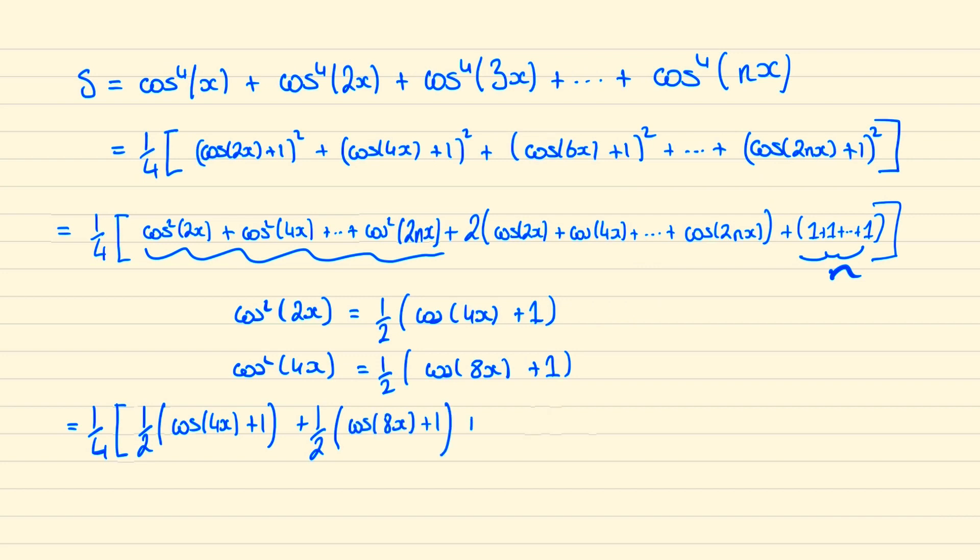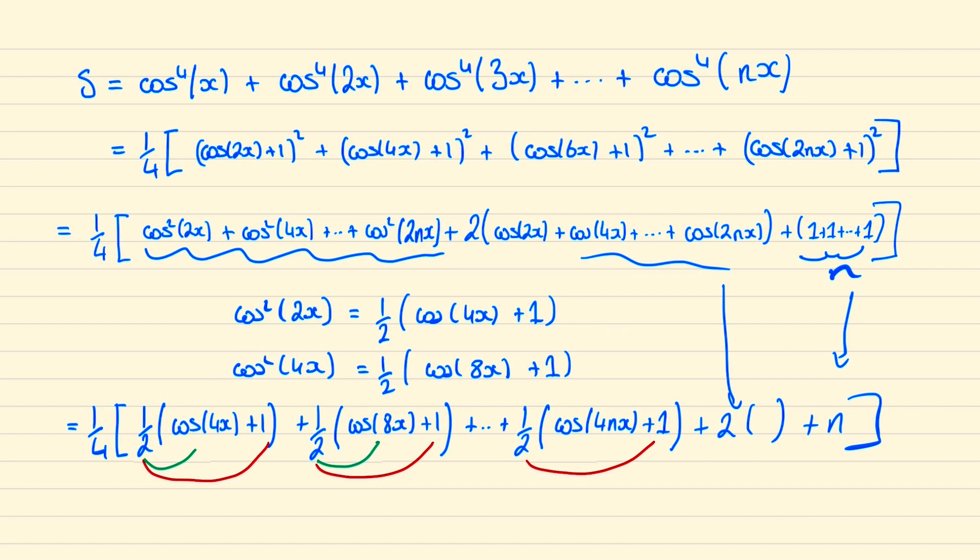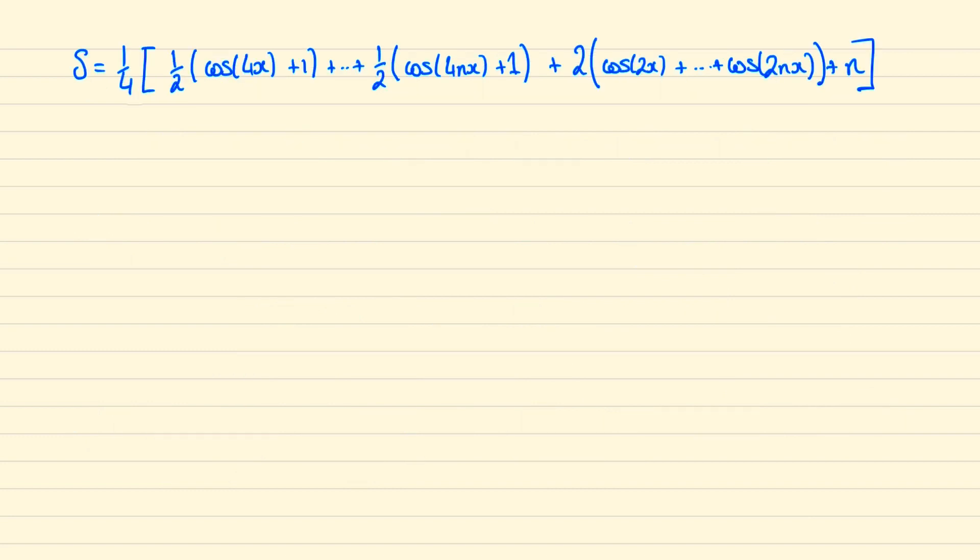So if we sub this into our equation for s, we have that it equals a quarter of one half cos 4x plus 1 plus a half cos 8x plus 1. This will continue upwards until we reach a half of cos 4nx plus 1, and then we'll be adding two lots of all of this series over here and this final n at the end. Once more we can distribute a half into all these brackets, so realizing that we're going to have a half here appearing n times, and we'll have another series of a half cos 4x, a half cos 8x, and so on.